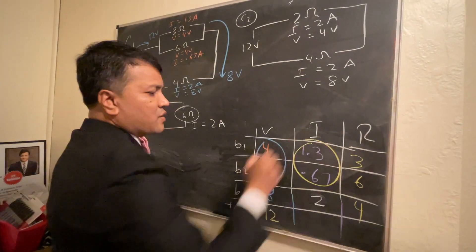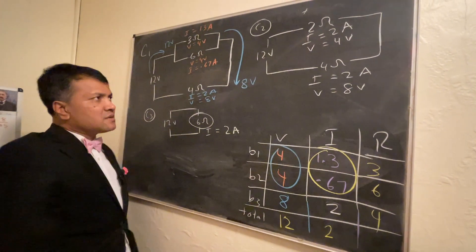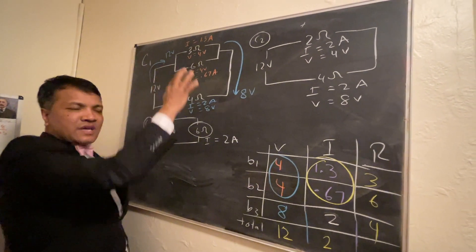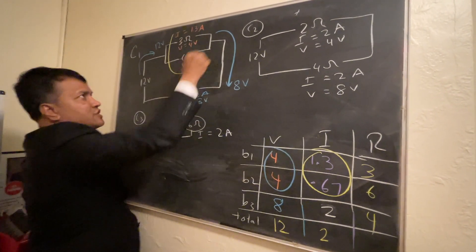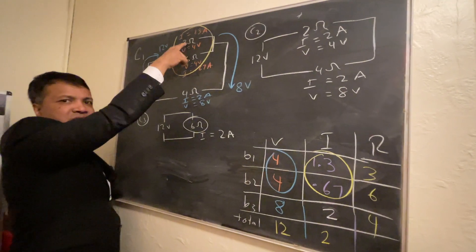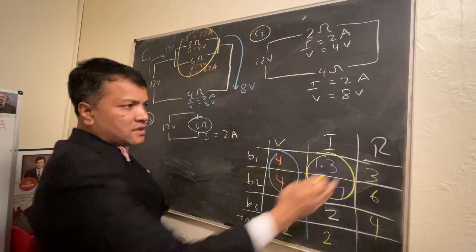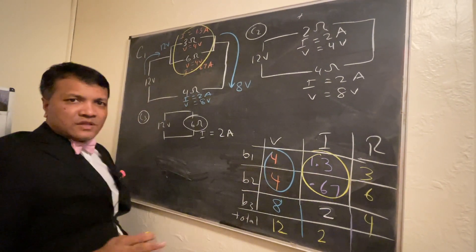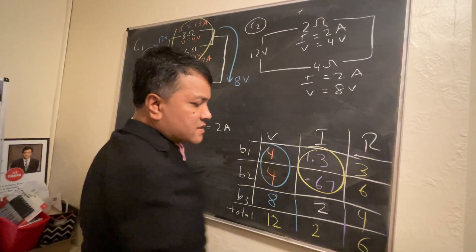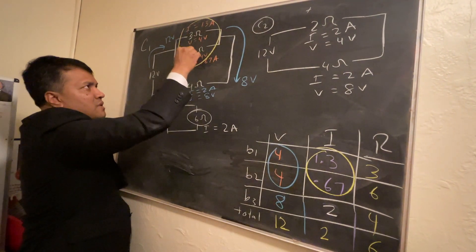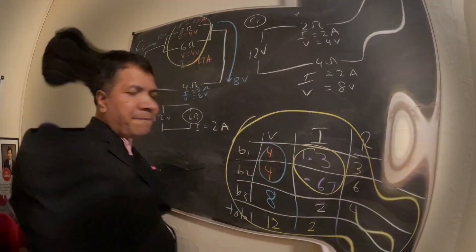For the currents: 1.33 plus 0.67 equals 2 amps, which confirms that current is shared in a parallel circuit. The total equivalent resistance is six ohms, because three and six in parallel give two, and two plus four equals six.